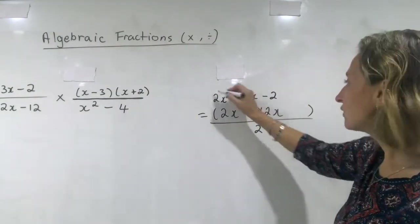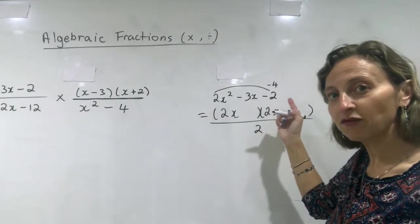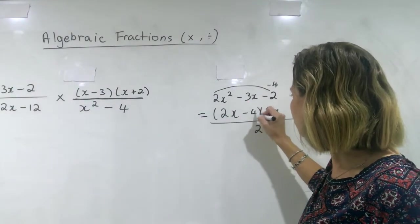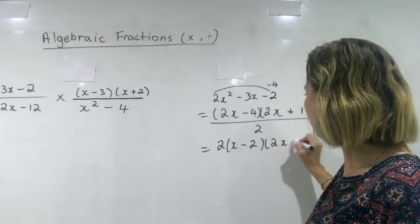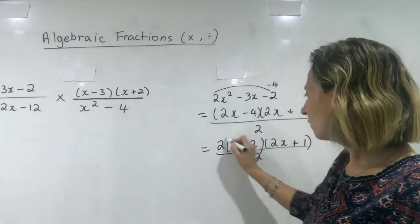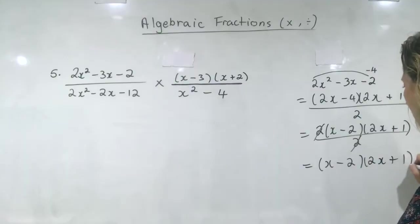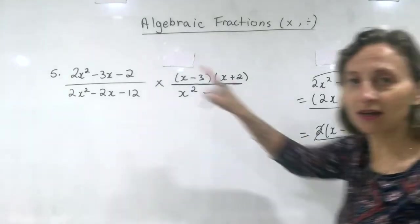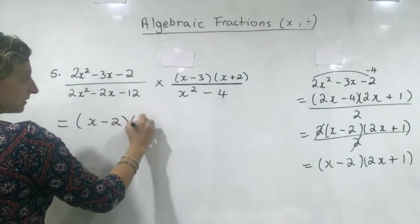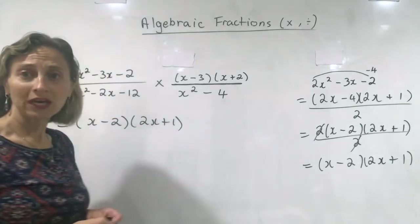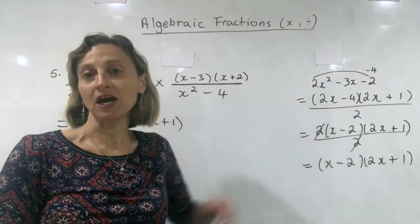To factorise a non-monic trinomial we need to do a fraction that cancels, which gets quite complicated. So I'm going to do that working over here and then bring it back to the equation. Two times two is minus four. I need to multiply to give minus four and add to give minus three: minus four plus one. This is my setting out — keep it tidy so the teacher can read it and award marks for working.